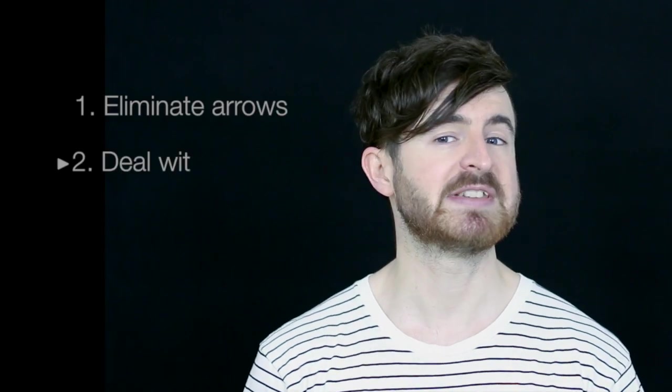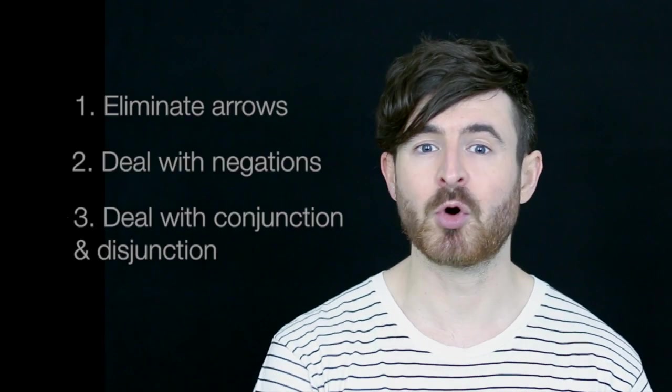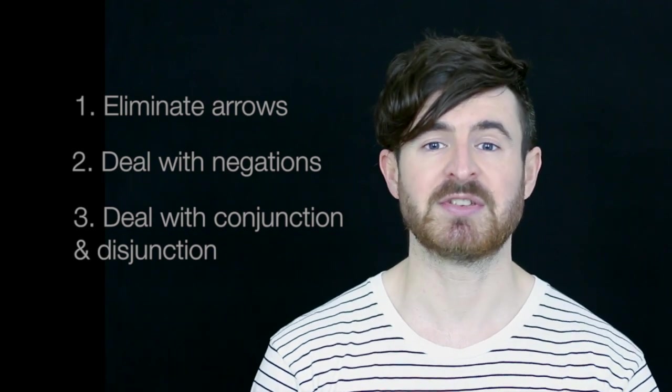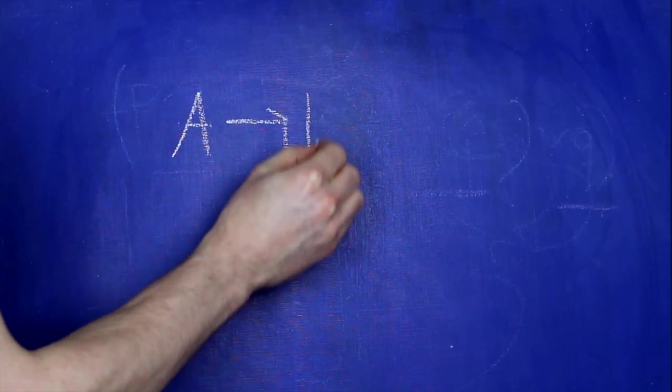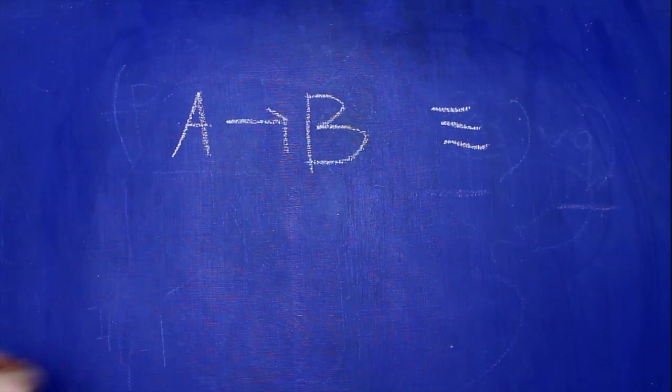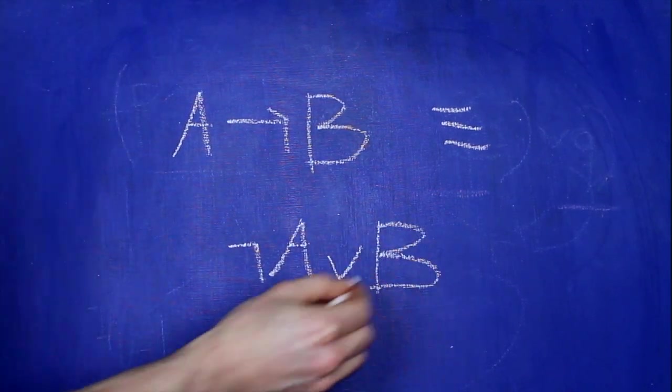First, we deal with arrows. Then we deal with negations. And then we deal with the order of conjunctions and disjunctions. Step one: we have to eliminate all the arrows. We do that by converting 'if A then B' into the equivalent 'not A or B'.